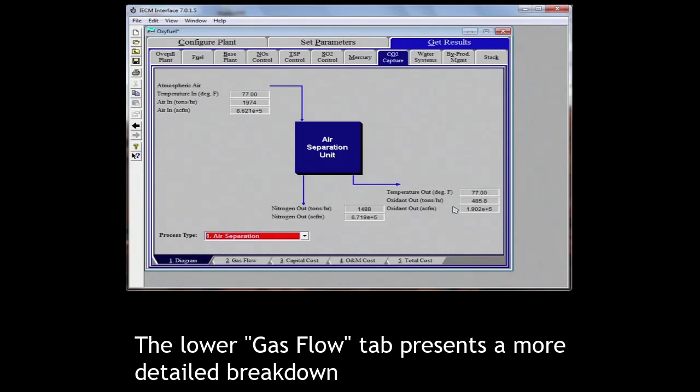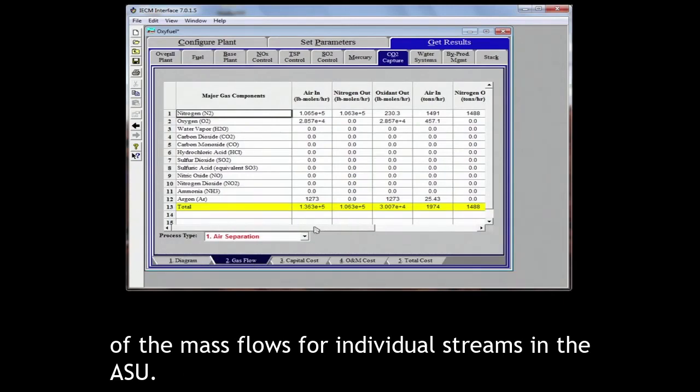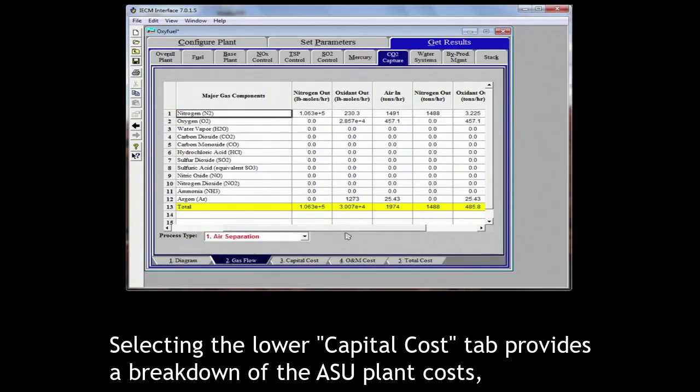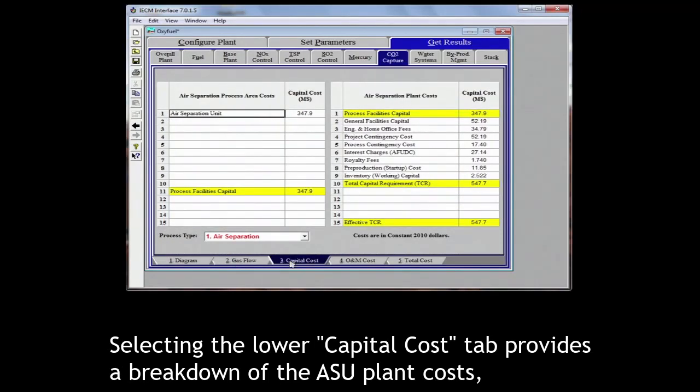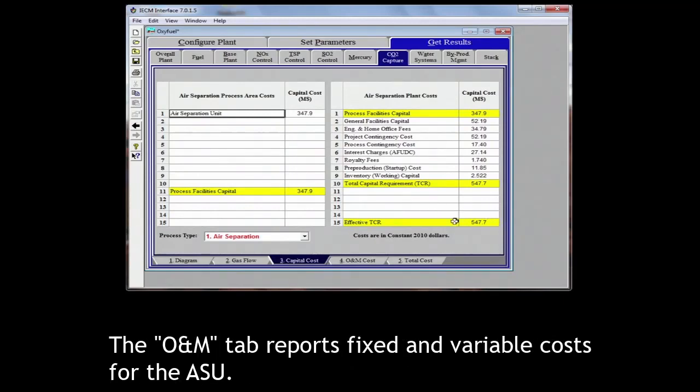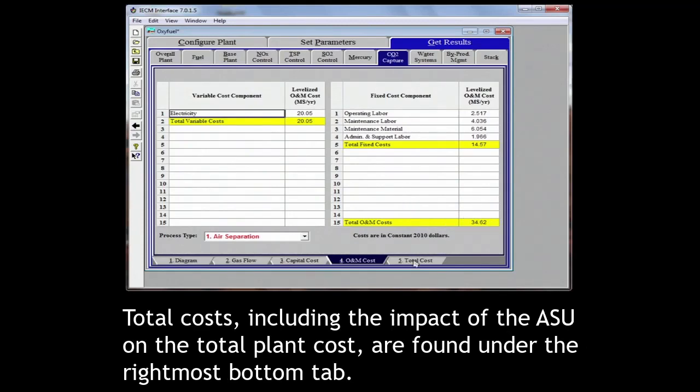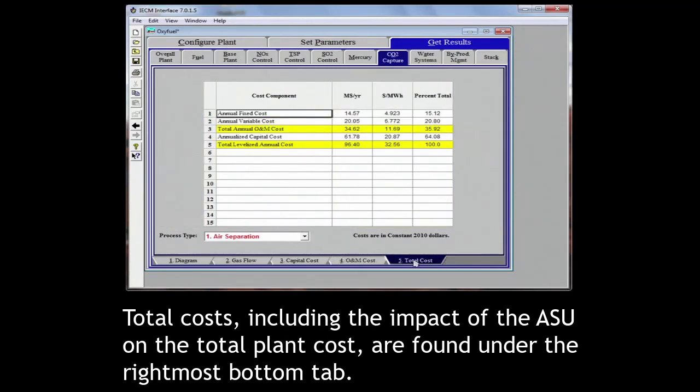The lower gas flow tab presents a more detailed breakdown of the mass flows for individual streams in the ASU. Selecting the lower capital cost tab provides a breakdown of the ASU plant costs as well as a total capital requirement for the oxygen plant. The O and M tab reports fixed and variable costs for the ASU. Total costs including the impact of the ASU on the total plant costs are found under the rightmost bottom tab.